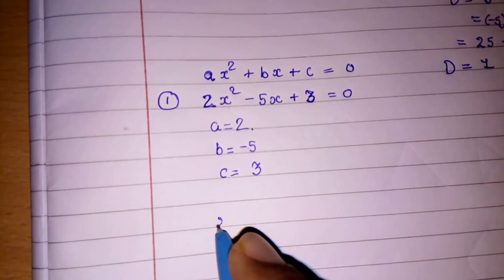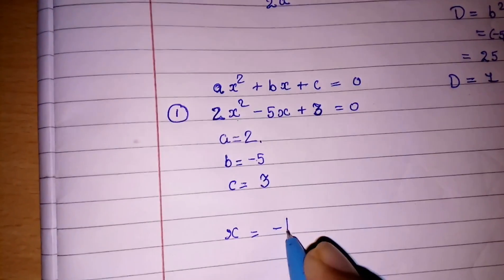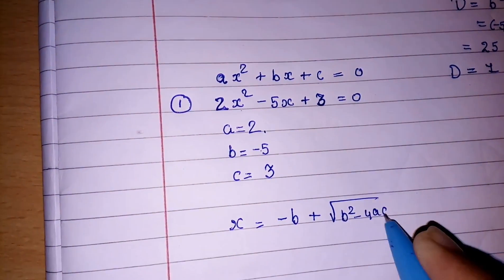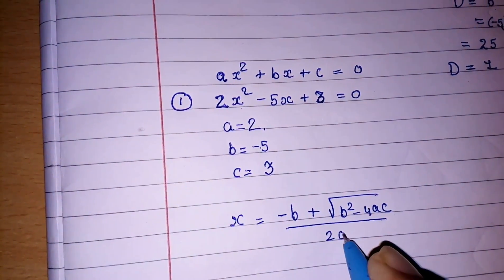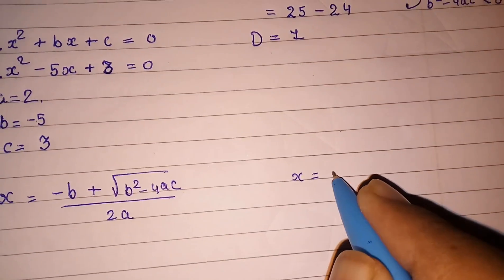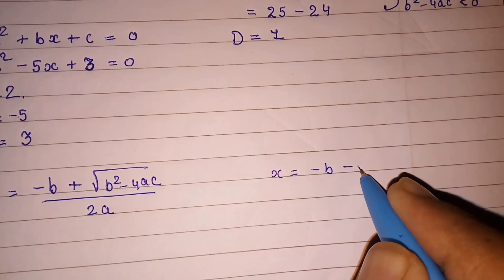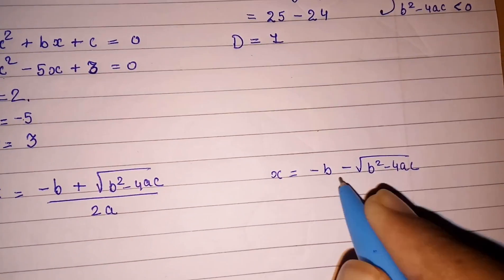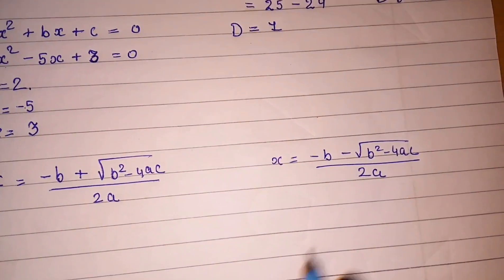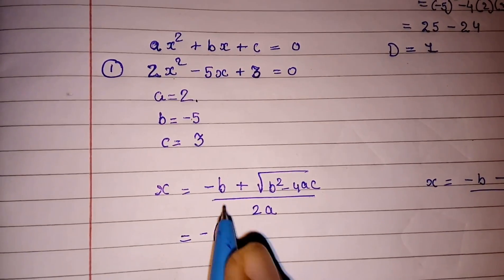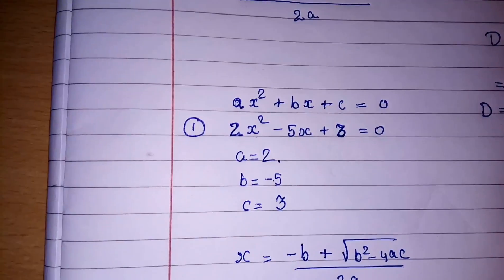So formula is x = (-b ± √(b²-4ac))/2a. Now putting the values. First we will solve this. Now minus b. What is b here? It is -5.